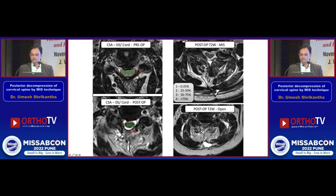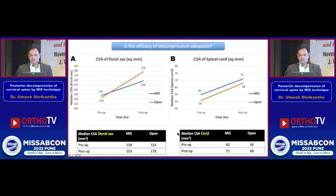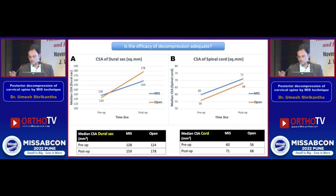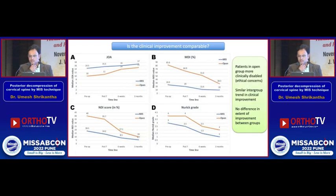We considered the deep and superficial paraspinal muscle groups separately, as there is a significant fascial plane between them in the cervical spine. In a post-operative open case, the deep muscle group is significantly edematous whereas the superficial group is less so. Regarding decompression adequacy: the cross-sectional area of the dural sac showed greater improvement in the open group, but the cross-sectional area of the spinal cord — the clinically relevant measure — showed proportionate improvement in both the open and minimally invasive groups. We can conclude that adequate spinal cord decompression can be achieved with MIS.